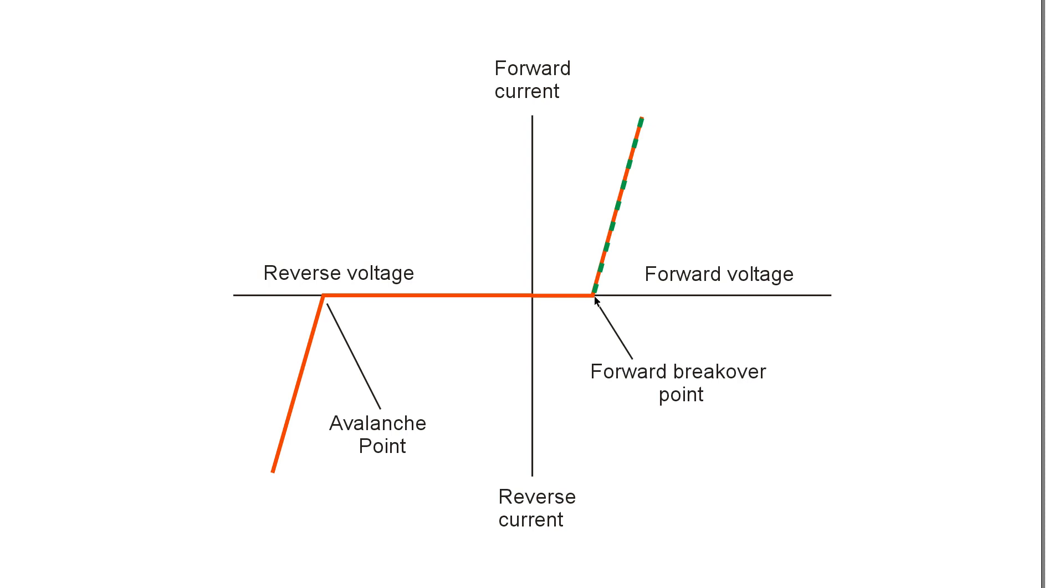But once you reach that point, that six-tenths of a volt or thereabouts, you reach the forward break over point at which the diode sort of gives up very easily and begins to conduct very well. And that is the chief purpose for which a diode is used, is to act as a one-way current gate.